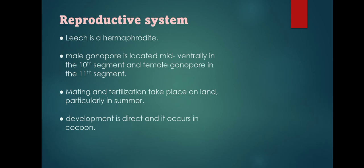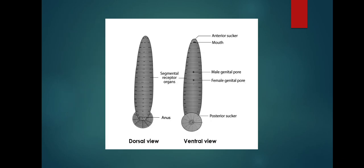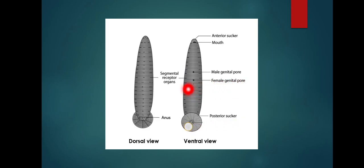The leech is a hermaphrodite. The male gonopore is located mid-ventrally in the 10th segment and the female gonopore in the 11th segment. Mating and fertilization takes place on land, particularly in summer. Development is direct and occurs in a cocoon. The diagram shows the dorsal and ventral view of Hirudinaria with the male and female genital pores indicated.